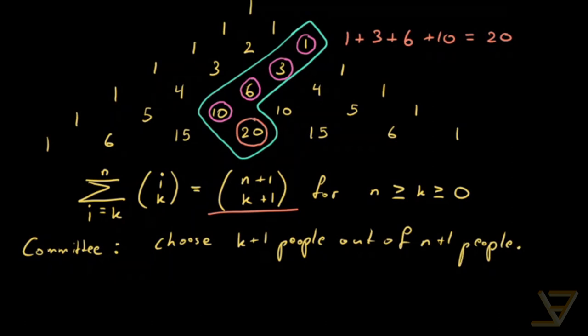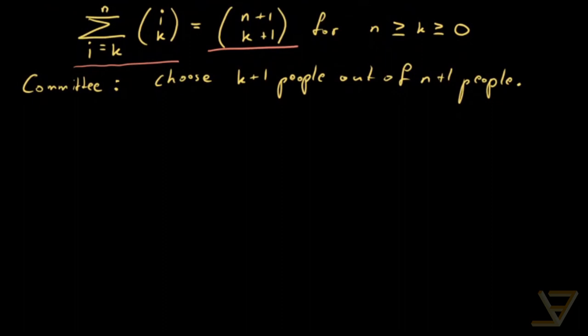The left side is a bit more complicated. What we're going to be doing is pretending like the people have distinct heights and order the people from shortest to tallest.